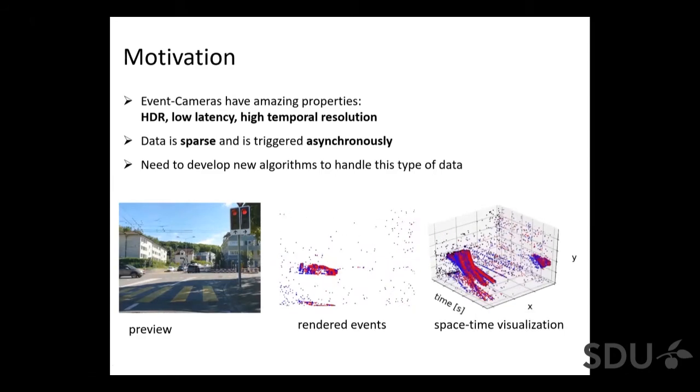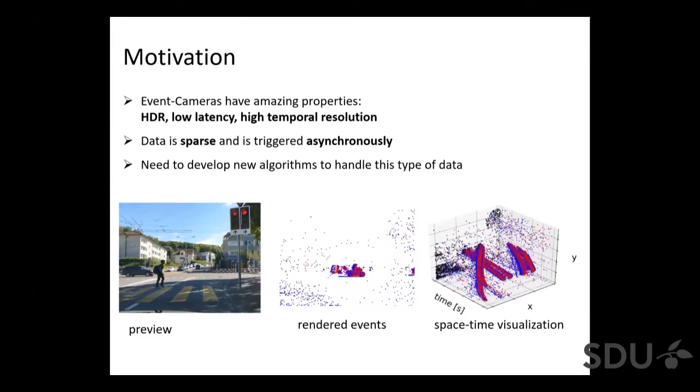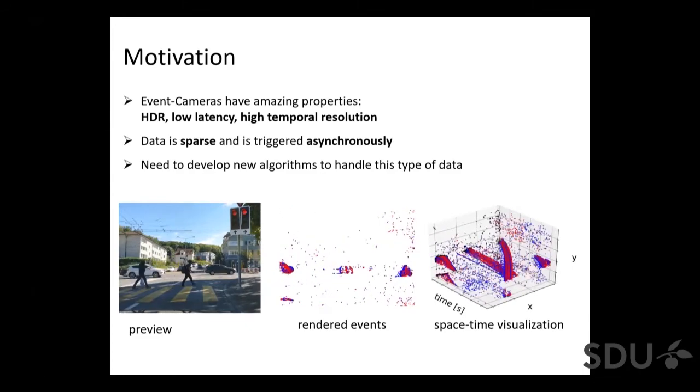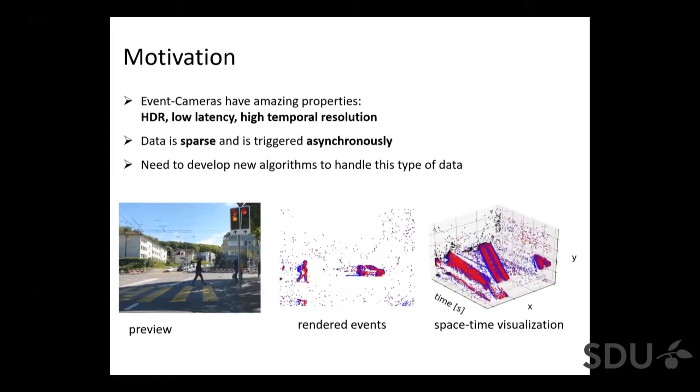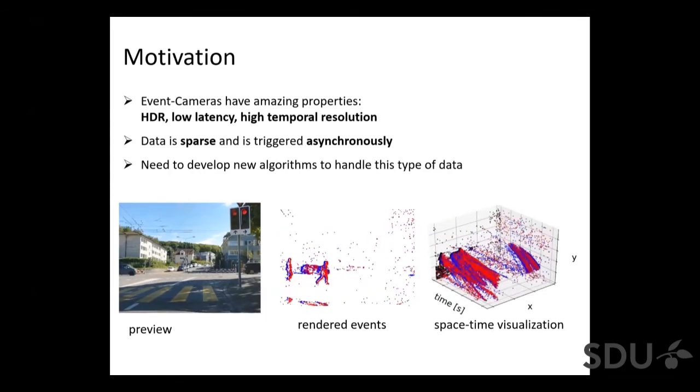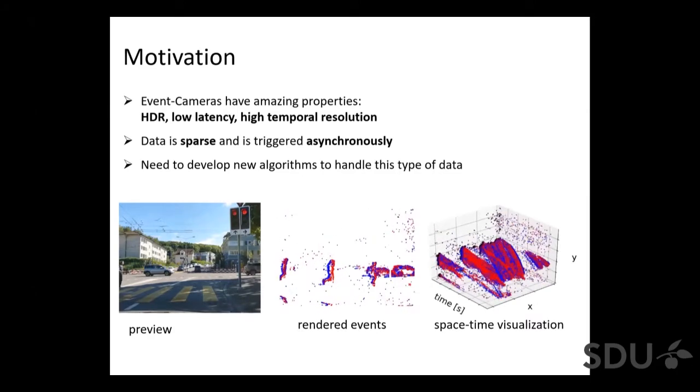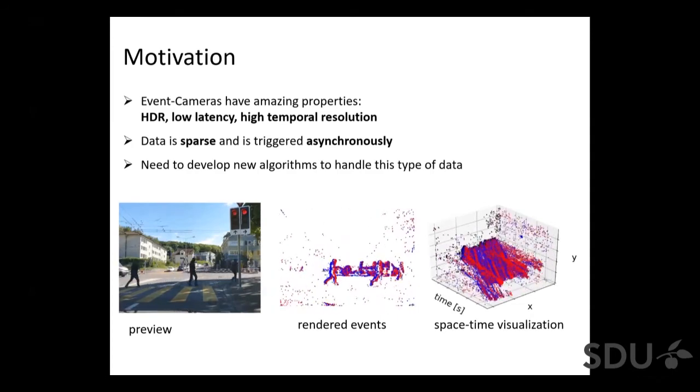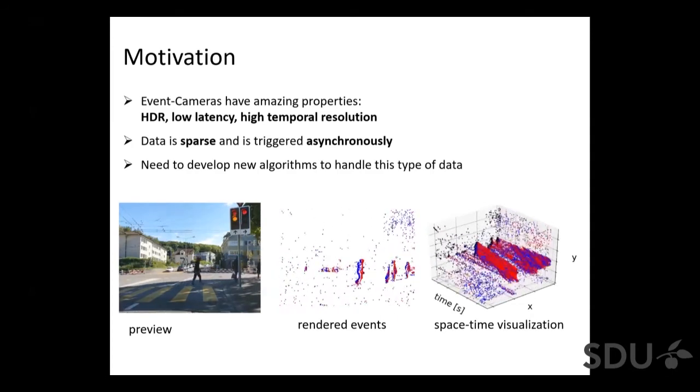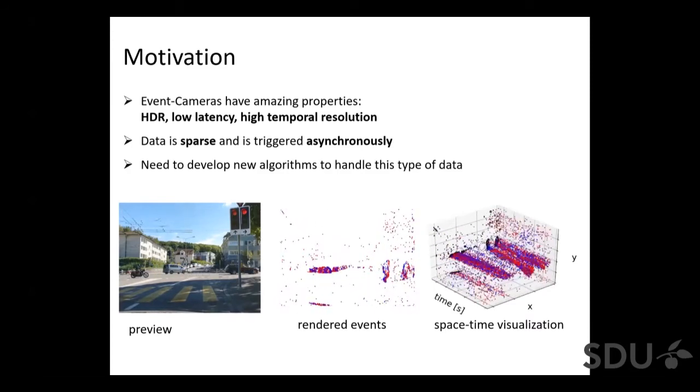Let's start with the motivation. As we've learned in a couple of presentations so far, event cameras have amazing properties. They are HDR, they have very little motion blur, they are low latency, have high temporal resolution. However, the challenge is that the data is sparse and triggered asynchronously, so for this reason we have to design novel algorithms to handle this kind of data since we cannot reuse algorithms designed for images.